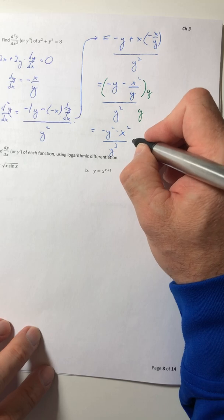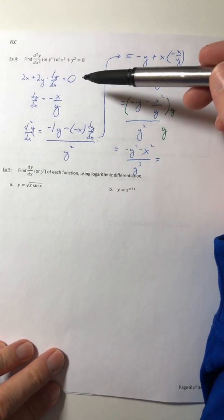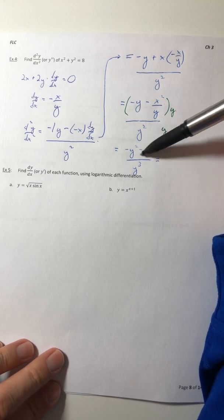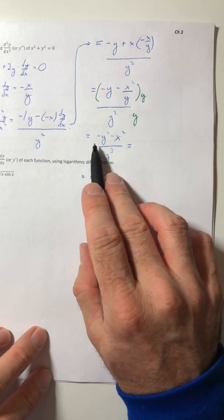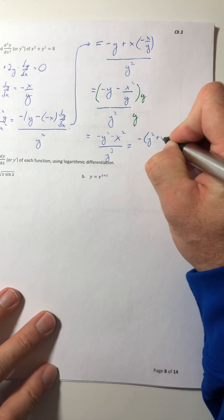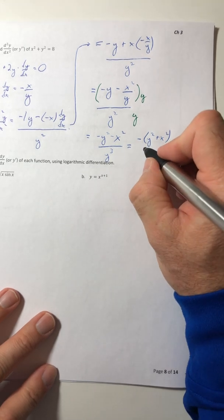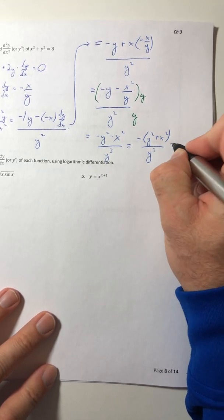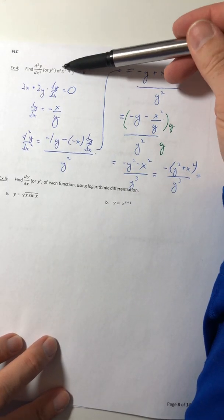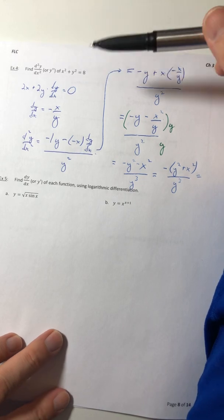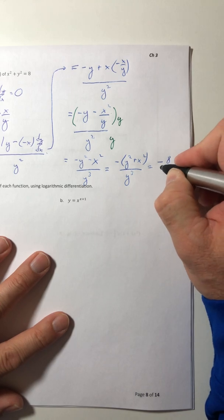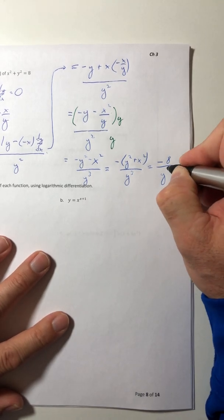Now, second derivatives are notorious with implicit differentiation at least for the original function to be substituted in at the very end. So if I took a negative out of that quantity on top, I've got y squared plus x squared, which I've seen before. That's the original equation right there. X squared plus y squared is equal to 8. So this quantity I'm going to replace with an 8. So it's just negative 8 all over y to the third.